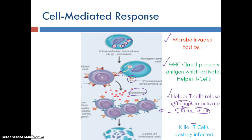As soon as the killer T cells find a cell that matches, they literally bore holes into the infected cell. Water and fluids will enter and that cell will burst — it'll be destroyed. At the same time, don't forget about our memory T cells. They do the same thing as the memory B cells in that they remember this MHC, and as soon as they see cells with that MHC displayed, they will immediately destroy them without having to wait to be activated by the whole chain of events. So it's a much faster, quicker response.